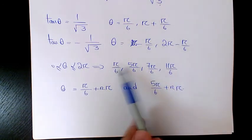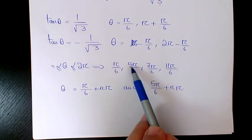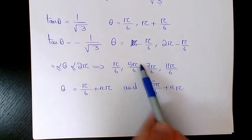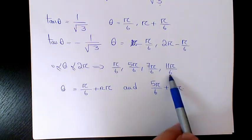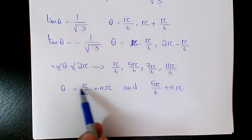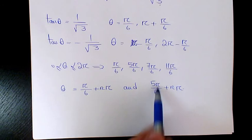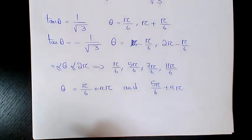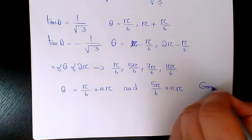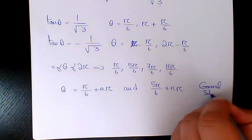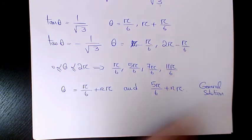Pi over 6 plus n pi and 5 pi over 6 plus n pi, where n is an integer. It can be positive or negative. This is basically the general solution.